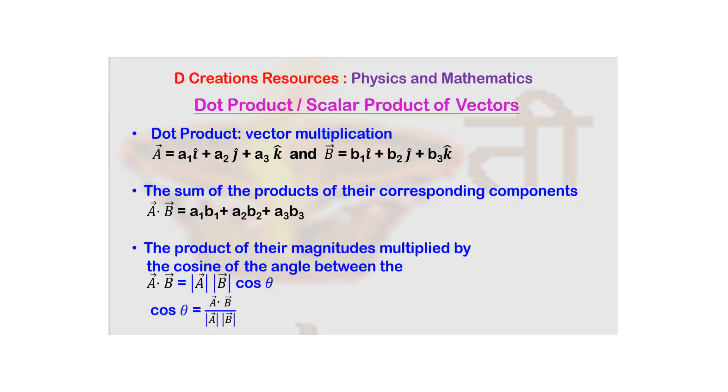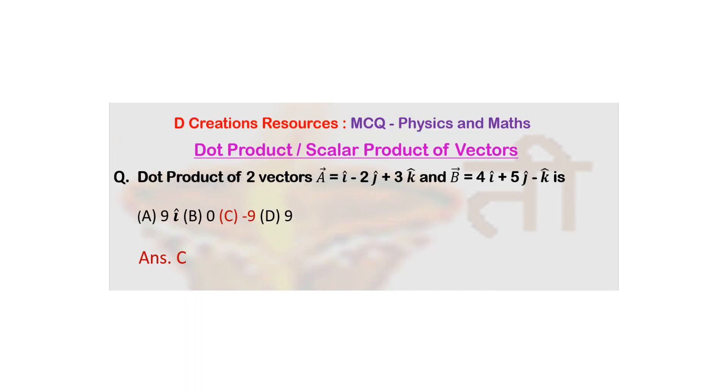Now what is our rule? You have to multiply the first i components, similarly then j components, k components and add them up. So going back, what is the i component here? This is 1 and this is 4. So this is 1 into 4 is 4. Then here it is minus 2 into 5, so it is minus 10.